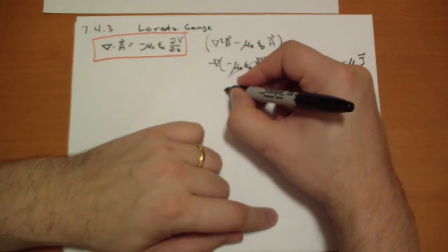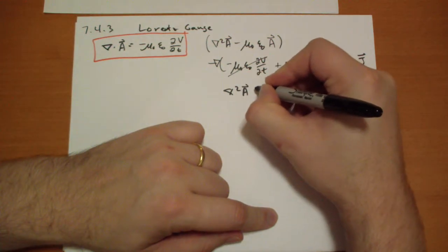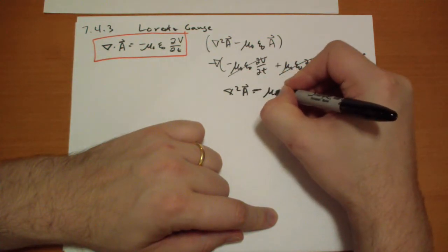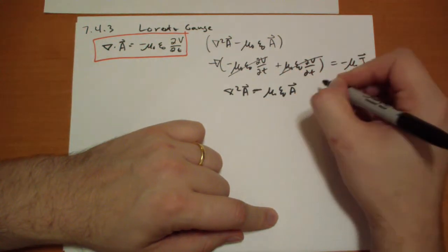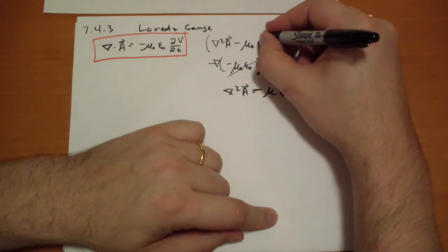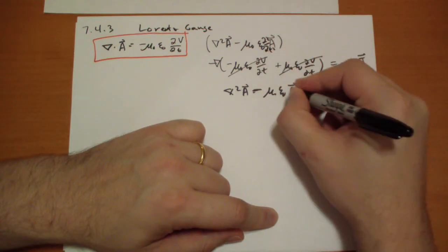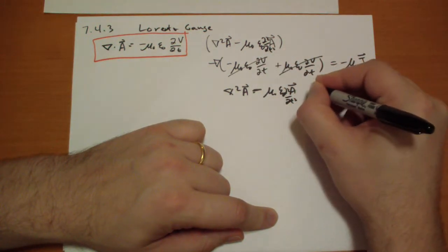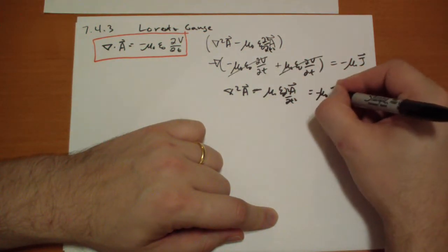And so what we're left with is this rather simple equation minus mu naught epsilon naught A vector. Am I doing this right? d by dt squared.